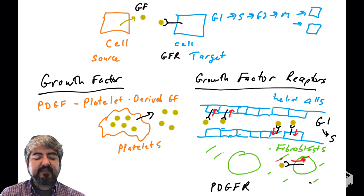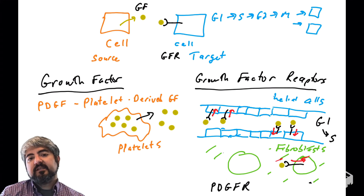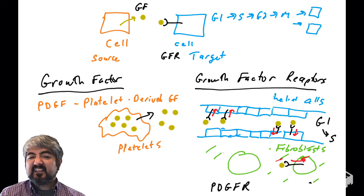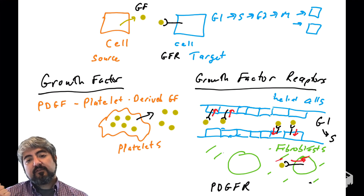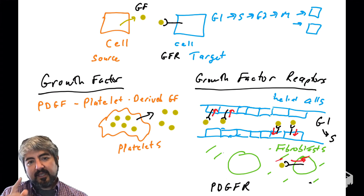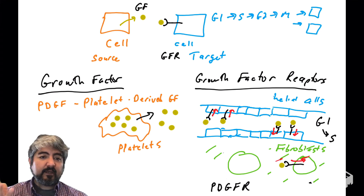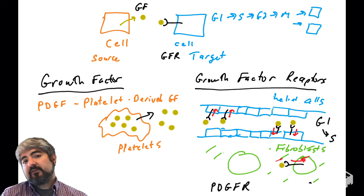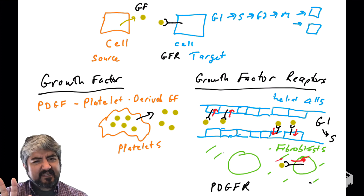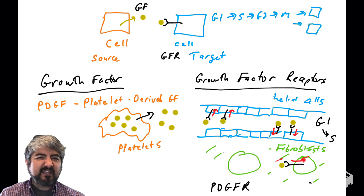We just saw the function of PDGF, which is to bind PDGF receptors found on cells such as endothelial cells and fibroblasts. When the growth factor binds the growth factor receptor, it causes the cells to enter the cell cycle and produce more cells. We've learned a growth factor and a growth factor receptor. Things are more complicated than that, but that's the simple version — we'll get more complicated later.